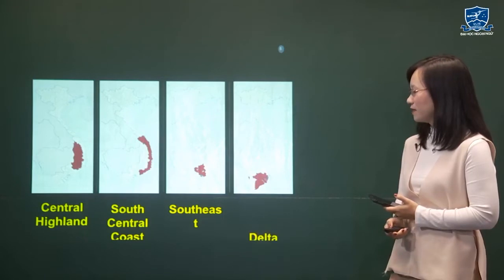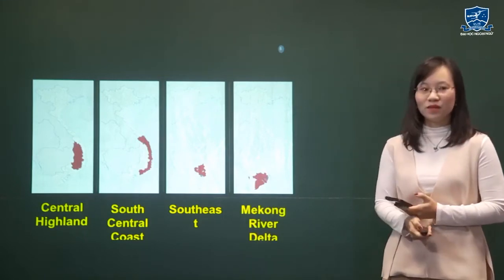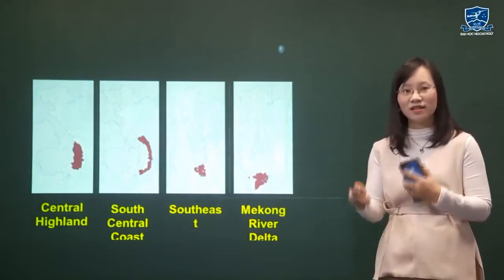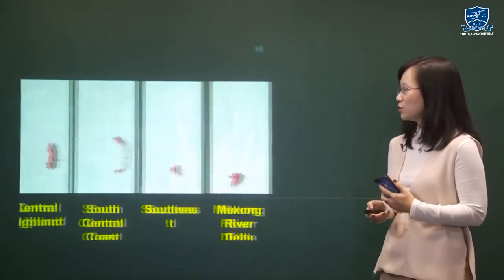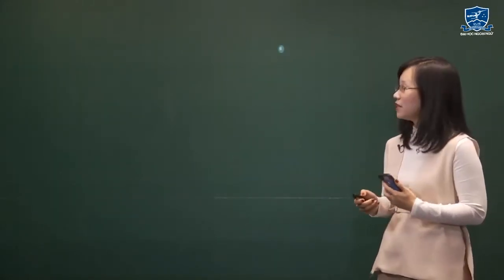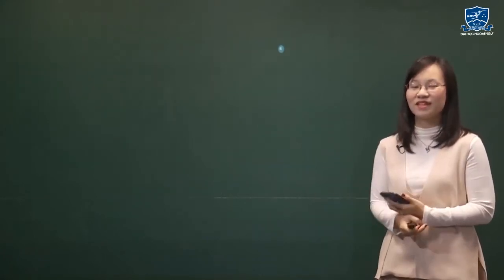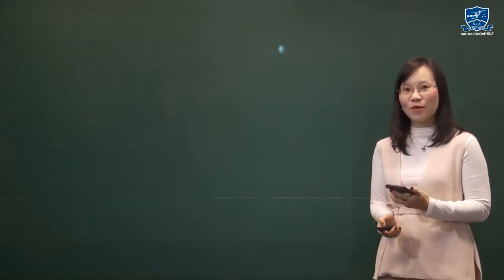The eighth and final region is the Mekong River Delta. So we have eight sub-regions in total. In your book, the regions are presented in order from north to south, with descriptions in terms of geography, people, and economy. However, today I am going to group the regions and compare them so we can see the differences more clearly.